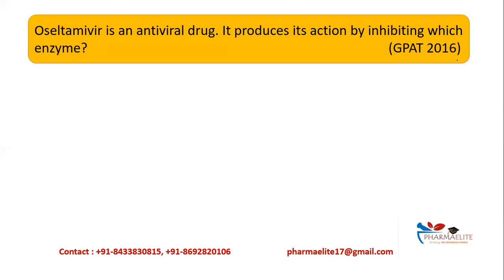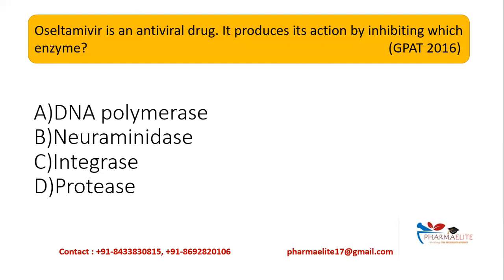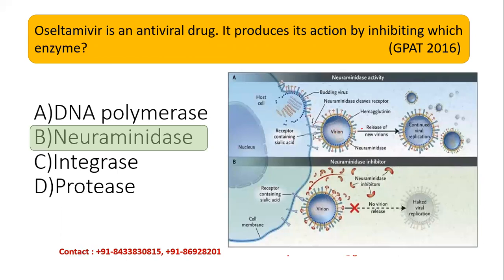This is a question asked in GPAT 2016: Oseltamivir is an antiviral drug — it produces its action by inhibiting which enzyme? Option A: DNA polymerase, Option B: neuraminidase, Option C: integrase, Option D: protease. The correct answer is Option B, neuraminidase. As studied in the mechanism of action, Oseltamivir binds at the neuraminidase receptor, preventing it from cleaving sialic acid from glycoprotein. This maintains the mucus intact so the virus is not able to bind to the host cell and infection is prevented.